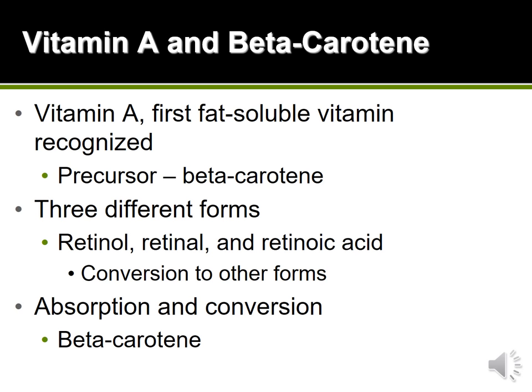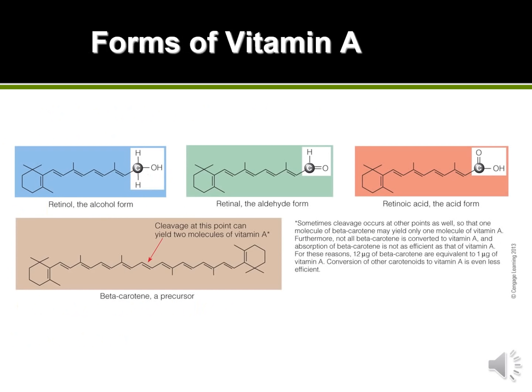Beta-carotene is not an actual active vitamin A, but when it enters the body it's converted into vitamin A. If we split beta-carotene straight down the middle it's going to look pretty much like the retinol esters. Beta-carotene will enter the body and then be split — if it gets split down the middle it'll make two vitamin A, if it gets split somewhere else it'll only make one. It doesn't split straight down the middle very often, so it's less efficient at making vitamin A but it does convert to some degree.